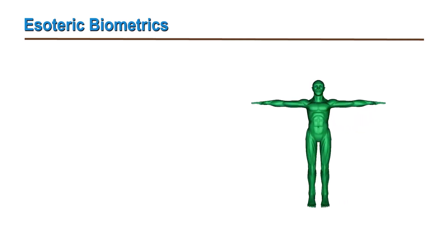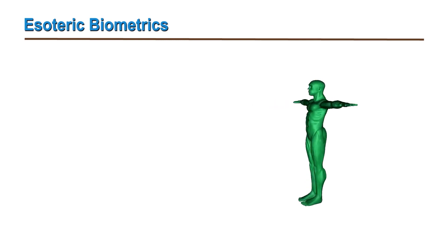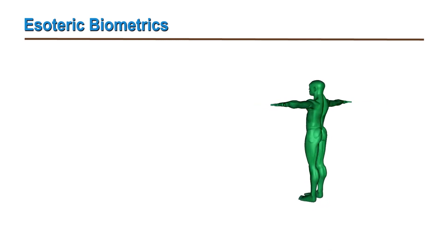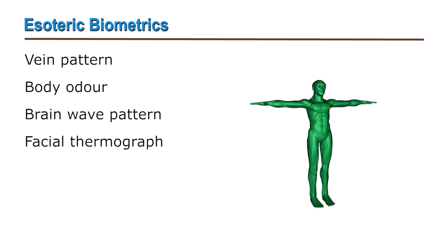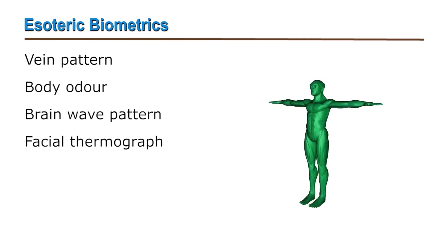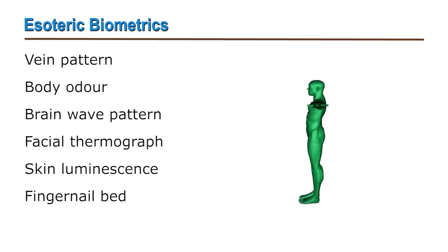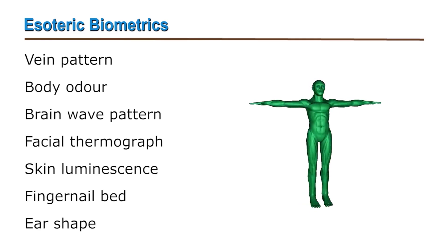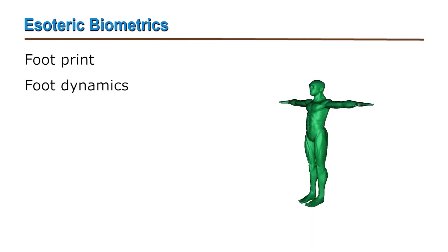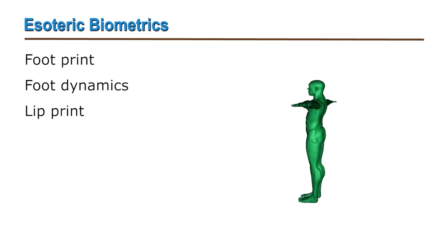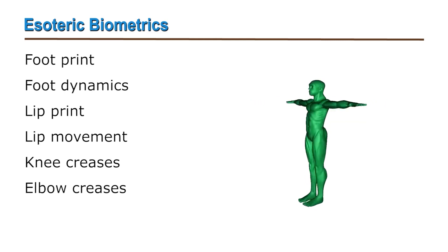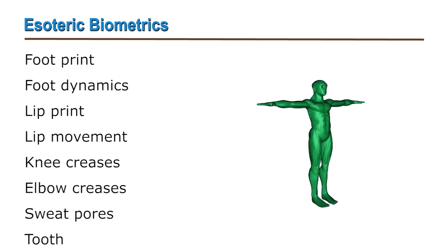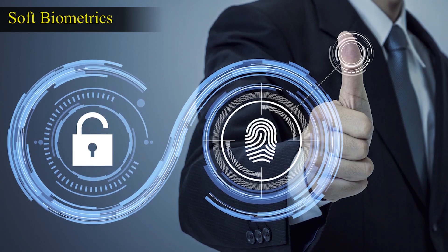There is another type called esoteric biometrics, which is another class of biometrics. Some examples of this type are vein pattern, body odor, brain wave pattern, facial thermography, skin luminance, finger nail bed, ear shape, footprint, foot dynamics, lip print, lip movement, knee creases, elbow creases, sweat pores, tooth, etc.